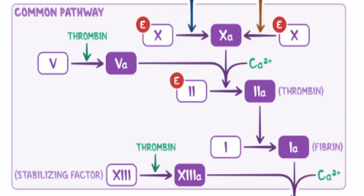Activated factors 10 and 5 and a calcium ion bind together, forming a prothrombinase complex. The prothrombinase complex then activates factor 2 into its active form. Activated factor 2 is also known as thrombin and is used to cleave several reactions, including factor 8 back in the intrinsic pathway. First, it cleaves fibrinogen, turning factor 1 into its active form. Afterwards, thrombin cleaves the stabilising factor, factor 13, into its active form. Factor 13 binds with calcium to then create fibrin crosslinks to help stabilise the clot.